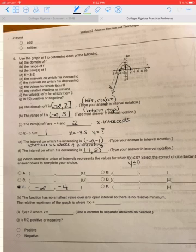H says the function has no smallest value over any open interval, so there is no relative minimum. That's true. The relative maximum of the graph is where F of x equals, well, what is the y part of that? That looks about like negative 1, 3. So F of x equals 3 where x equals negative 1.